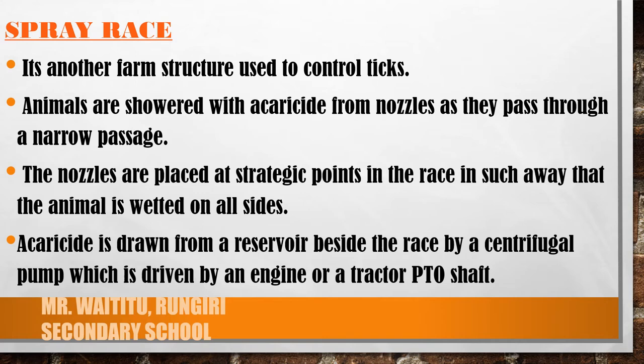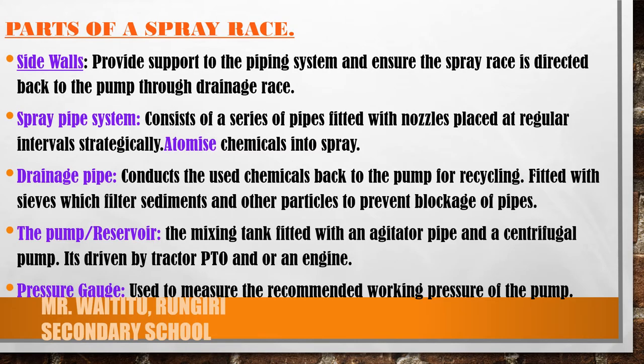The nozzles are placed at strategic points in the race such that the animals are wetted on all sides. The acaricide is drawn from a reservoir beside the race by a centrifugal pump driven by an engine or tractor PTO shaft. The sidewalls provide support to the piping system and ensure the spray is directed back to the pump through the drainage race. The spray pipe system consists of a series of pipes fitted with nozzles placed at regular intervals to atomize chemicals into spray.